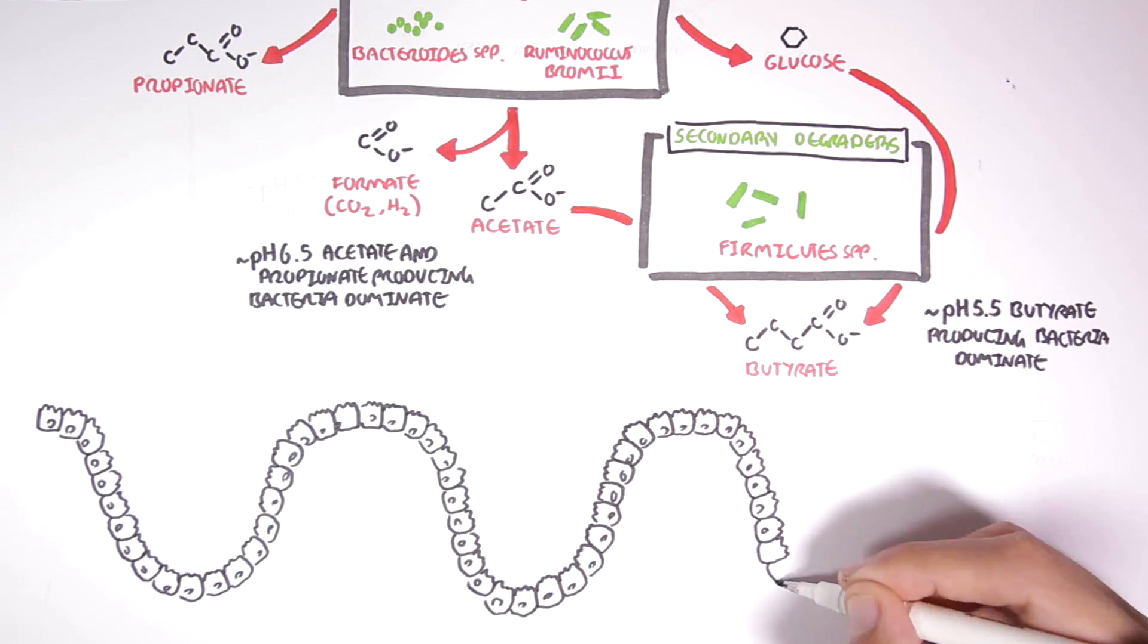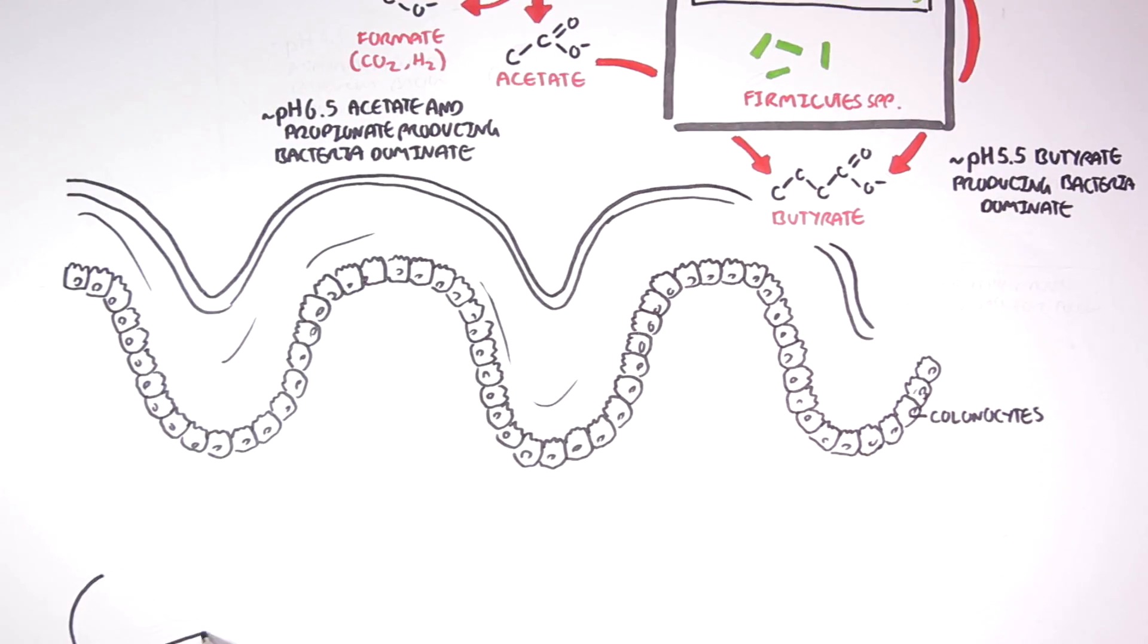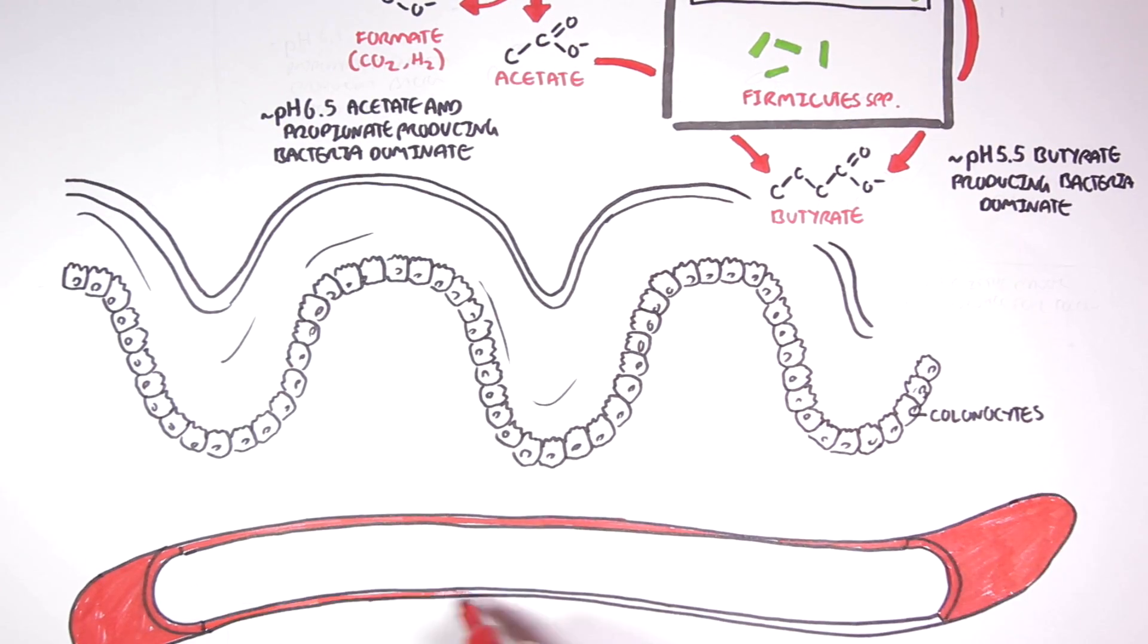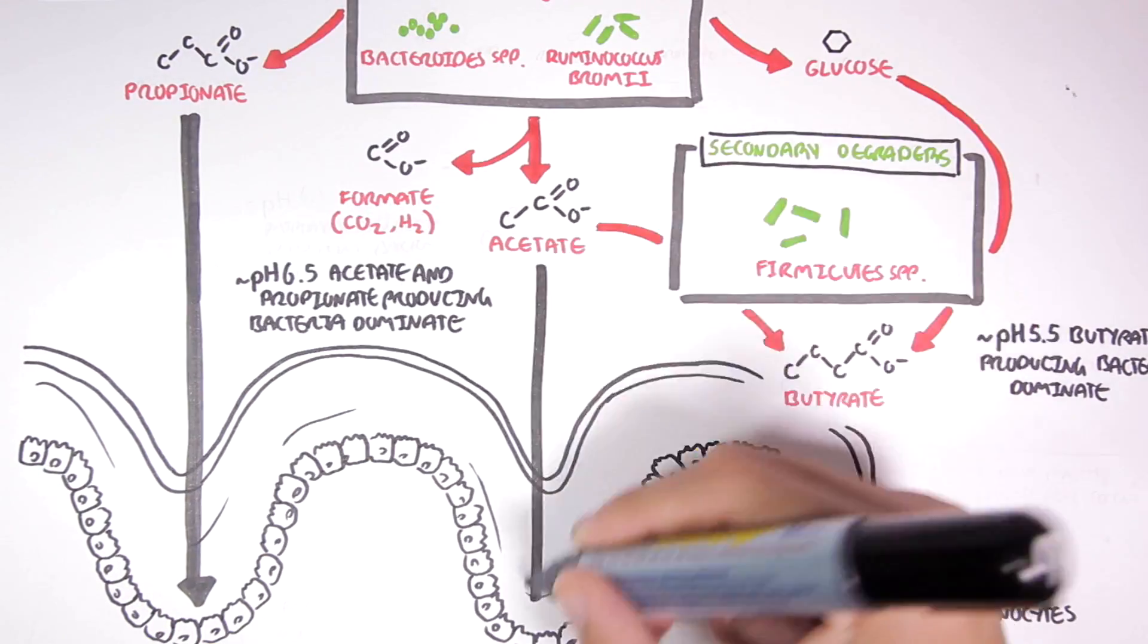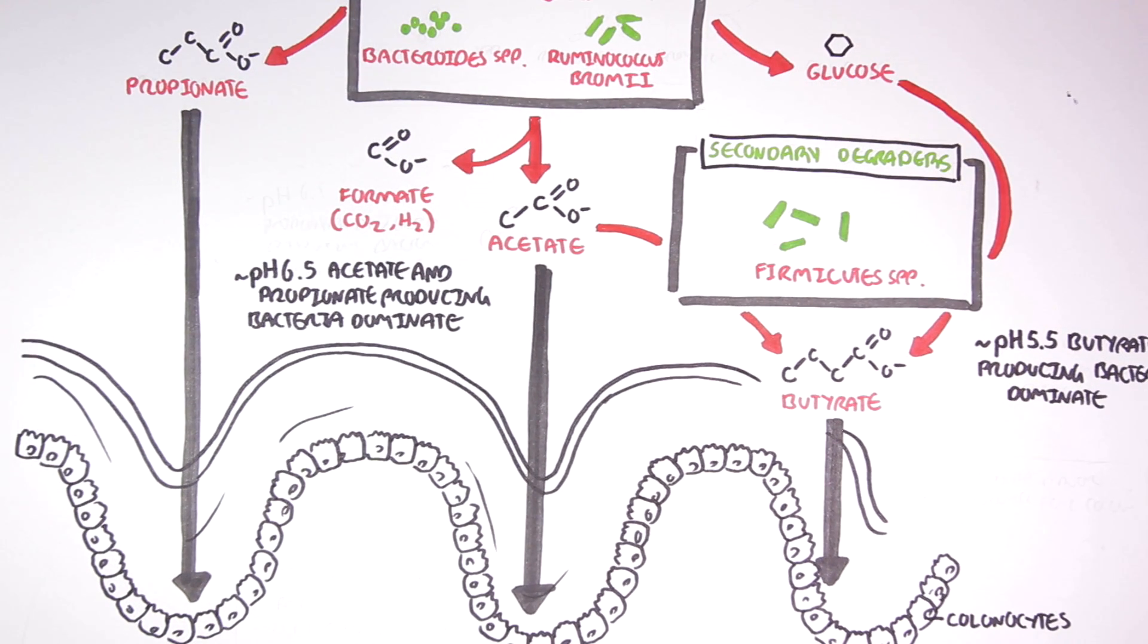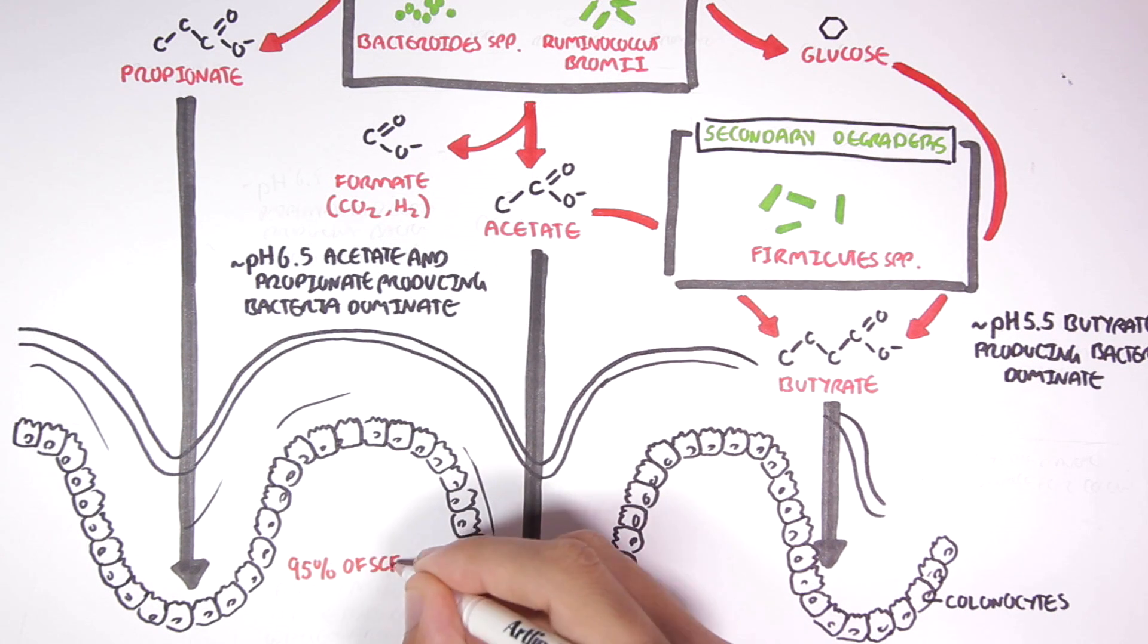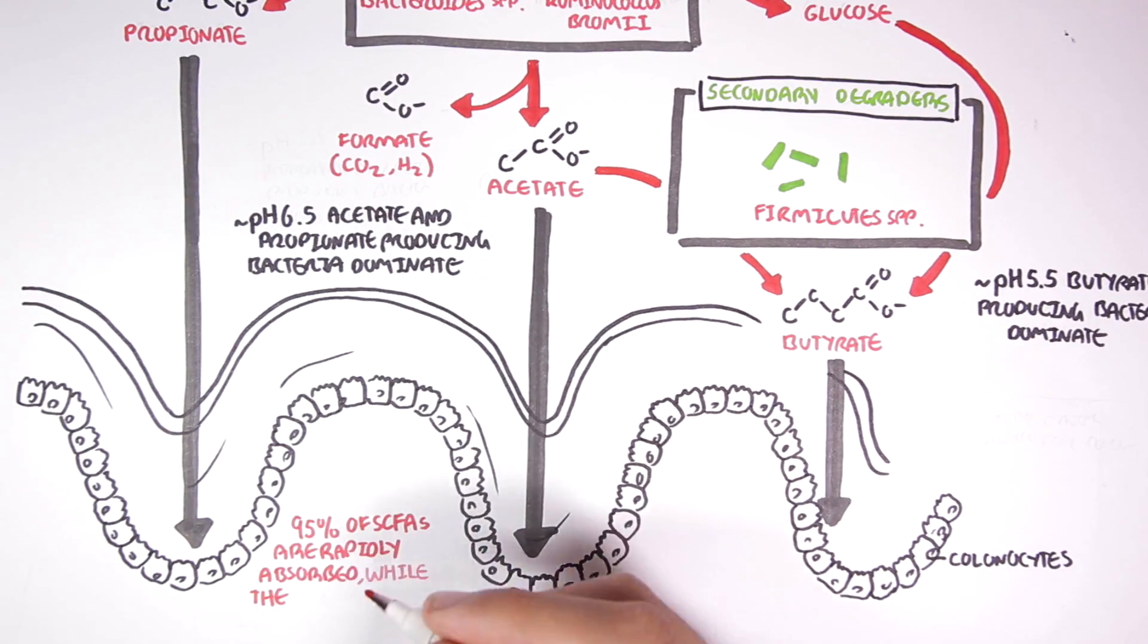From the lumen, these short-chain fatty acids are absorbed by the colon. They're absorbed by the colon epithelial cells, known simply as colonocytes. About 95% of the short-chain fatty acids are rapidly absorbed by the colon cells, while the remaining 5% are excreted in the feces.